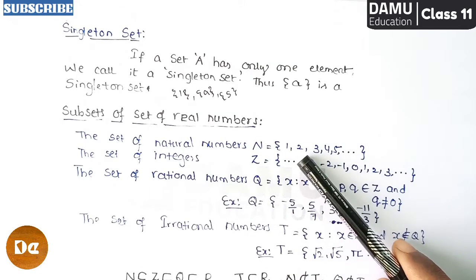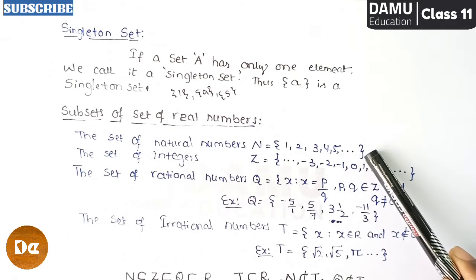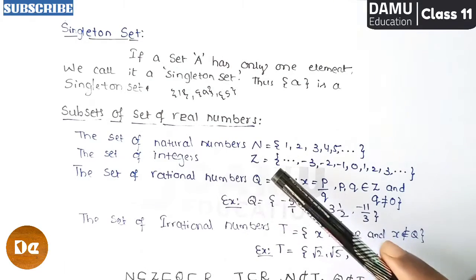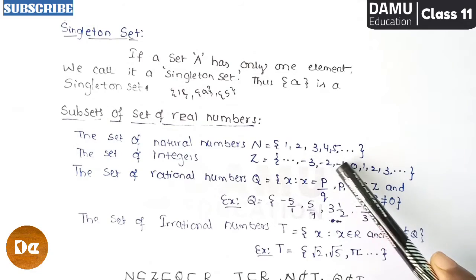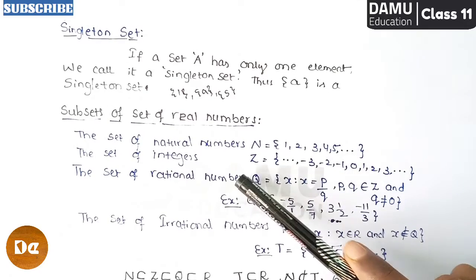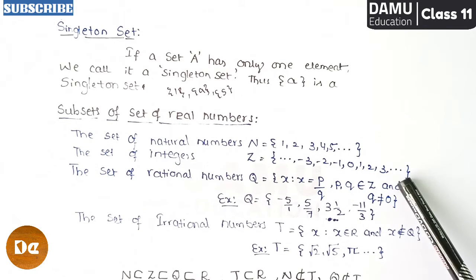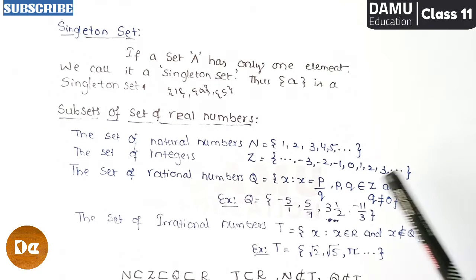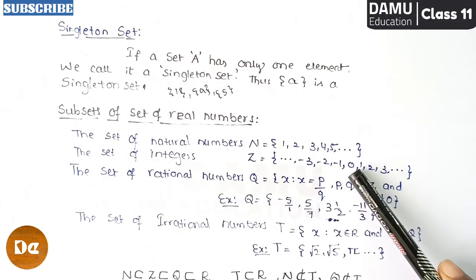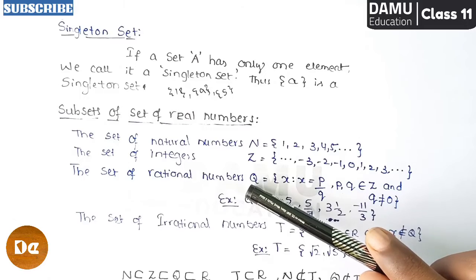The set of natural numbers starts from 1, 2, 3, 4, 5 and so on — the three dots indicate it is moving indefinitely. The set of integers is denoted with capital Z, sometimes also capital I. It includes negative numbers moving continuously on one side, zero, and positive numbers 1, 2, 3 moving infinitely on the other side — negative numbers, positive numbers, along with zero.